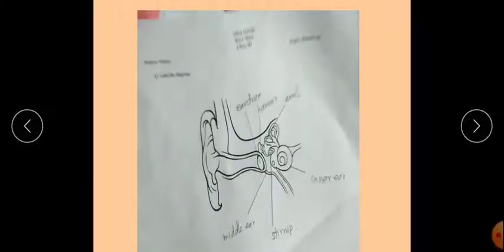Next worksheet is about ear on page number 7. You can take help from page number 7 about this. This one is ear drum. This one is hammer. This one is anvil and inner ear.